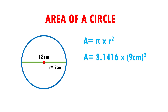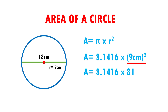I have A equals 3.1416 times, and I have to square 9 centimeters. So I multiplied 9 times 9, which gives me 81, and centimeter times centimeter gives me centimeters squared.